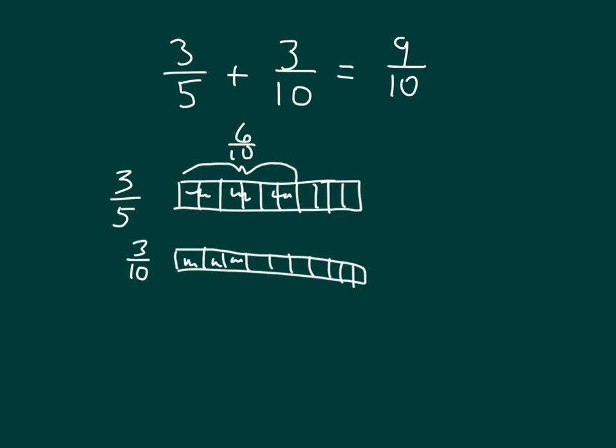Let's write nine-tenths to begin with. And then we'll write out the whole number sentence of what we changed and renamed this into. We renamed three-fifths as six-tenths. We added together three-tenths to equal nine-tenths.